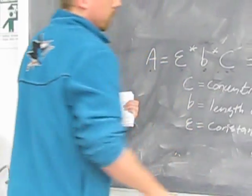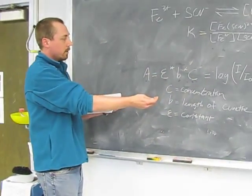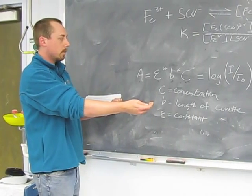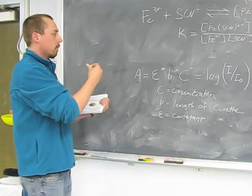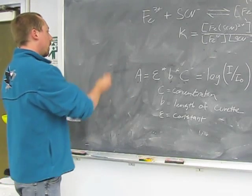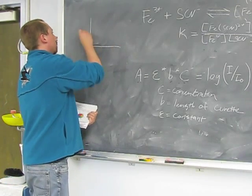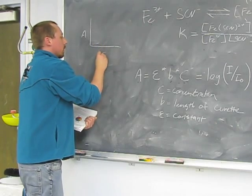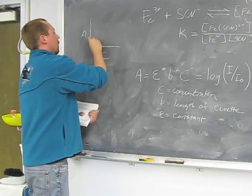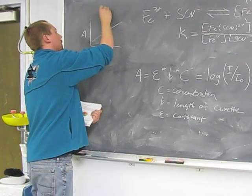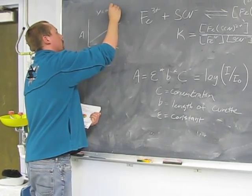Once you have your absorbance value from the spectrophotometer, it's very easy to plot this value of absorbance versus concentration where y equals mx plus b.